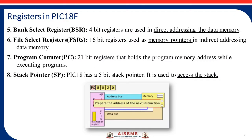The next register is the bank select register. We discussed BSR, FSR, PC, and SP — these four registers in detail in my last video. Bank select registers are generally used in data memory to divide the complete memory into banks and they store addressing into the data memory. File select registers are used when you open a particular file; at that time the file is stored at a particular location, and you can fetch that file at that particular location using memory pointers.